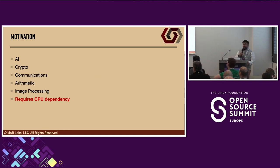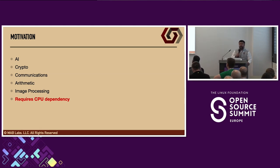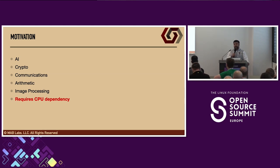A lot of the reasons we'd want to do this are in domains such as AI, crypto, communications, arithmetic, and image processing, where many operations are not optimal to do in software and you may want to offload to hardware instead. One important feature to keep in mind is that the CFU, as implemented in many RISC-V implementations, still requires the CPU to be involved in the operations. There are other mechanisms within RISC-V that allow more CPU-independent operations, useful for things like block ciphers in encryption.